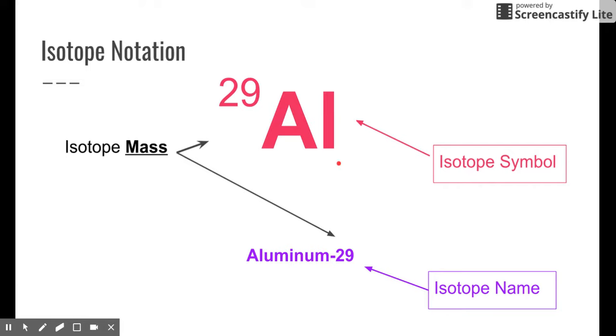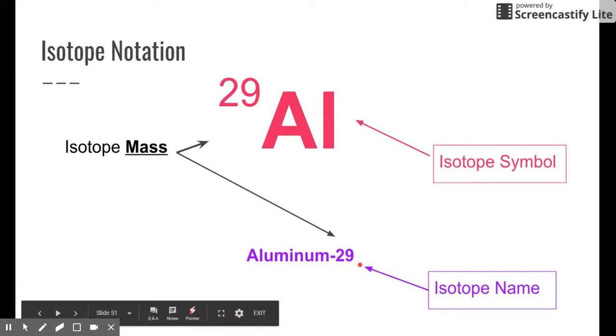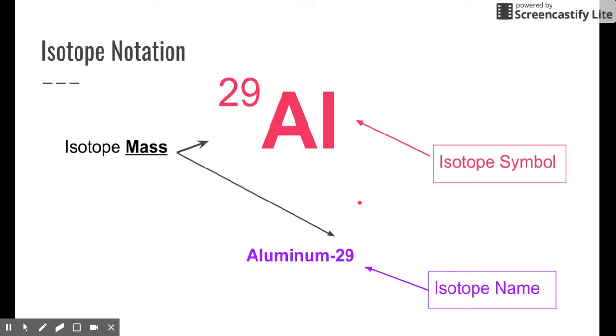So aluminum, if we write this mass in the upper left-hand corner, that's how we'll represent the symbol. Or we can do it a different way. We can write out the name, dash 29. But both of these represent the aluminum isotope or the mass. Now remember, aluminum has a number of protons of 13, so the rest of those is going to be the number of neutrons.